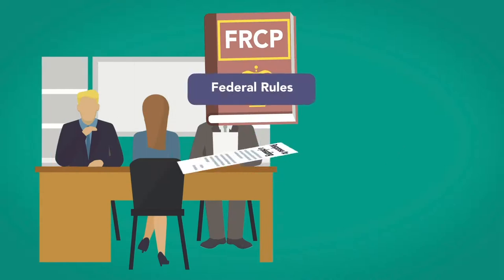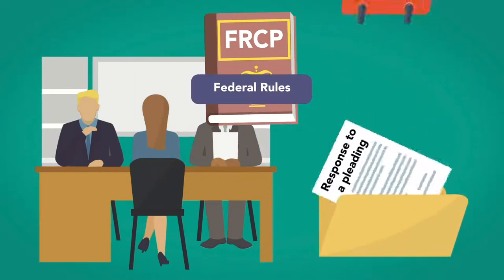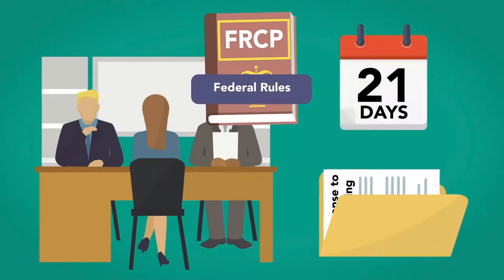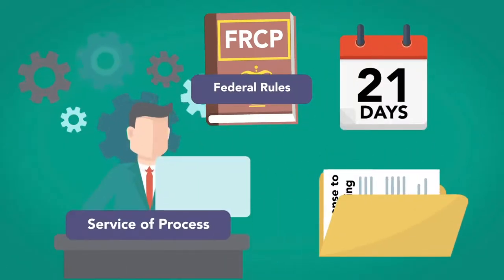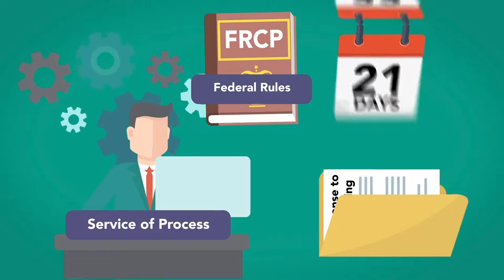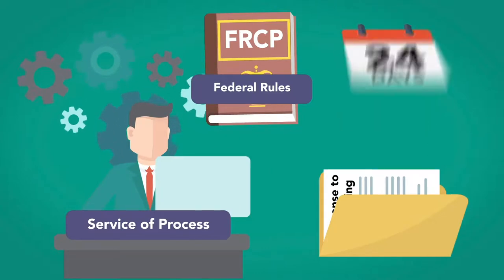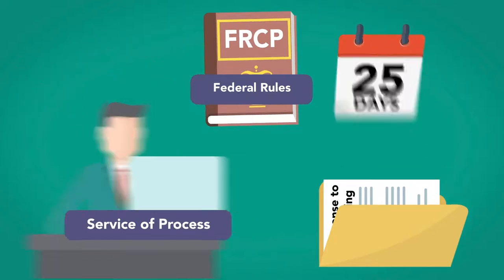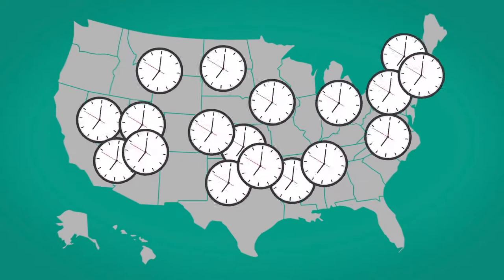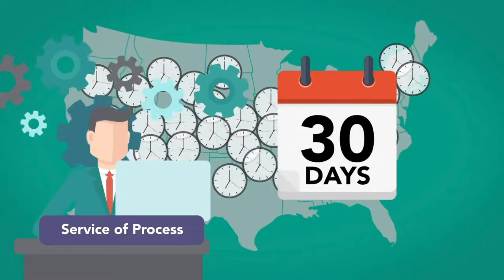Under the federal rules, a response to a pleading must be filed within 21 days after service of process. That time can be extended in certain cases and is subject to exceptions. States may have different time limits, but rarely more than 30 days after service of process.